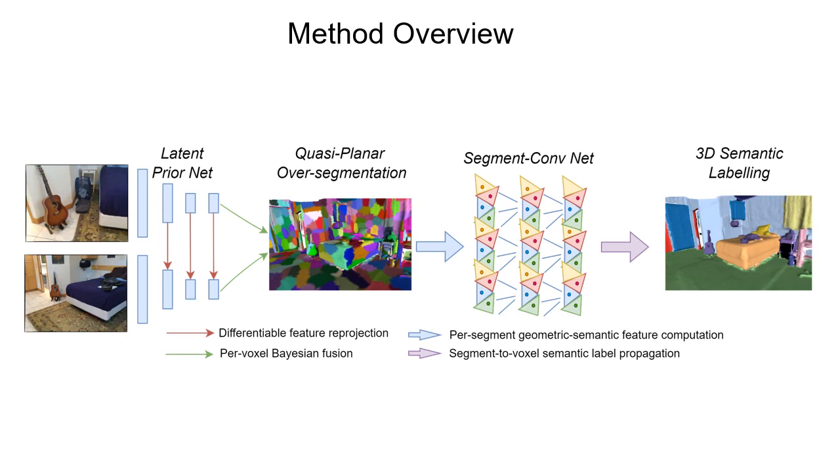First, a latent prior network enhanced with latent feature projection takes in RGBD frames and outputs 2D semantic labels, which are then lifted to 3D and aggregated over time with Bayesian fusion.